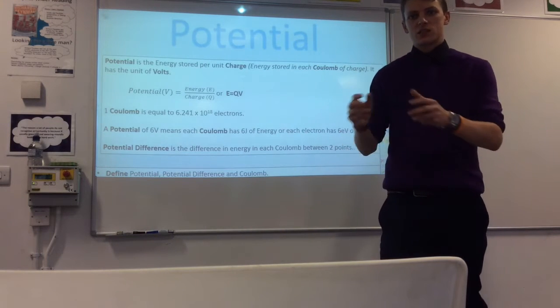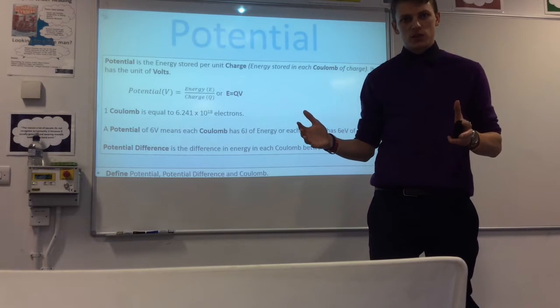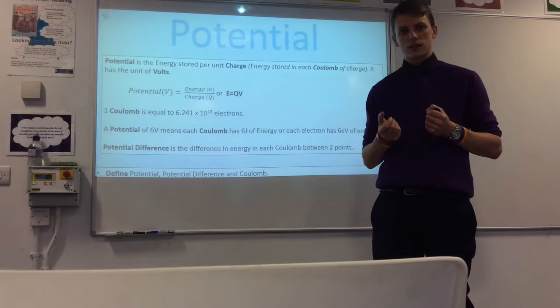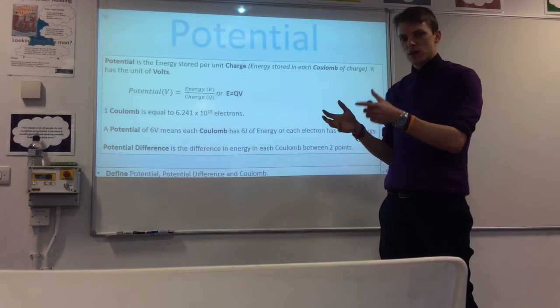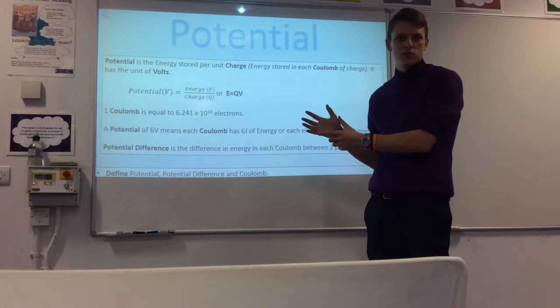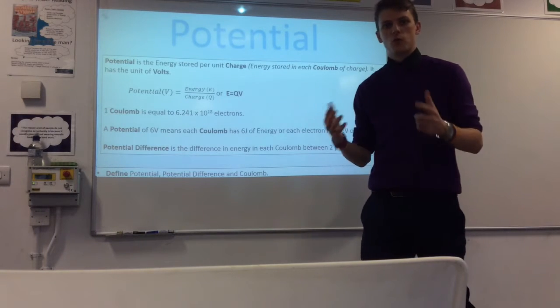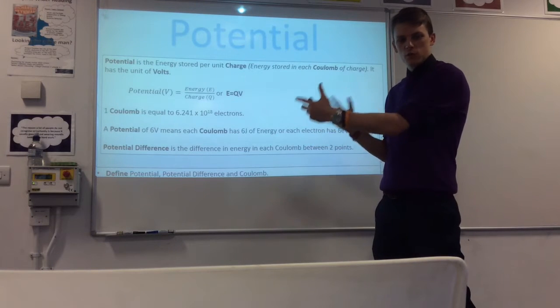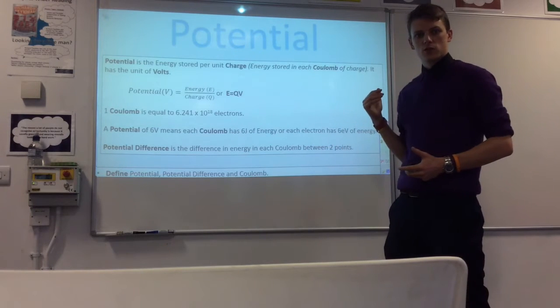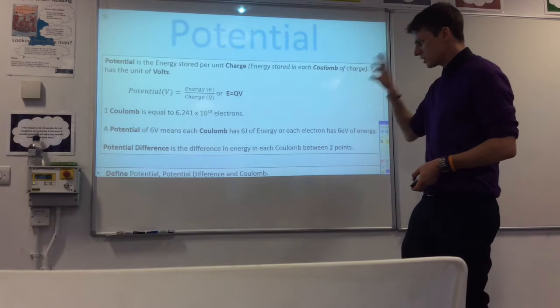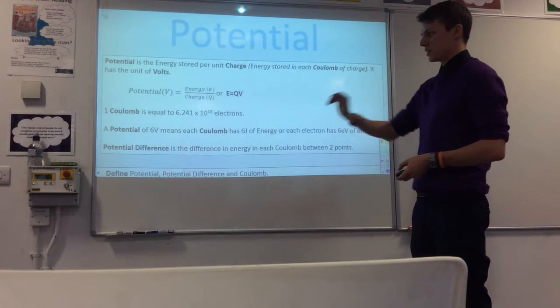So potential difference is the change in energy between two points. So when you have a voltmeter, you plug it into two parts of your circuit. And what you do is you measure the difference in the energy each Coulomb has between those two points. So if you measure a potential difference of four volts, that means your Coulomb has lost four joules of energy between those two locations you've plugged your voltmeter in. So that's potential, potential difference and your Coulomb.